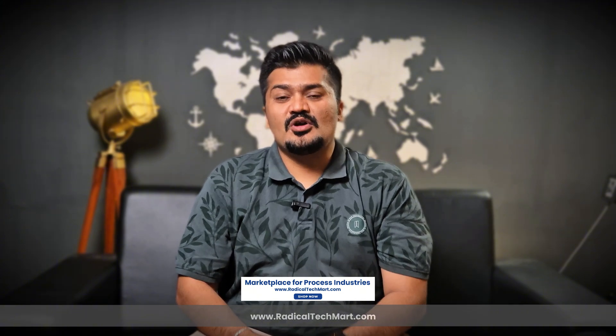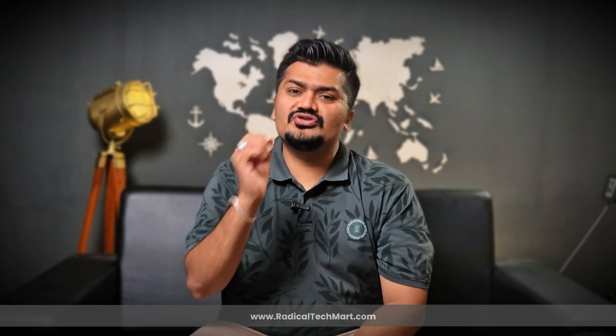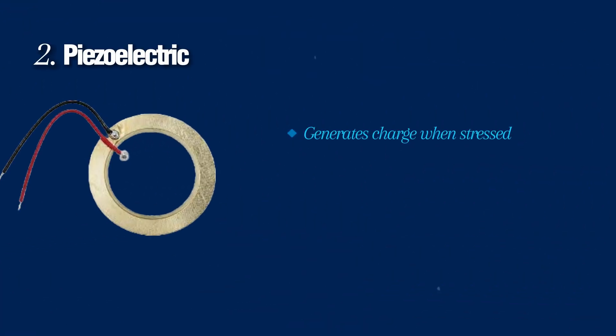Now we will cover common types of pressure sensors. Here are the most common types you will come across. First, the strain gauge — it uses diaphragm deformation and is ideal for steady and long-term pressure monitoring. Second is piezoelectric, which generates a charge when stressed, best for dynamic high-speed pressure changes.